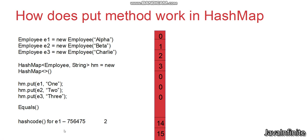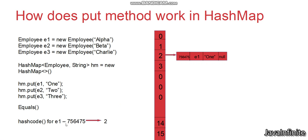Next, it calculates the index — which bucket this value should be placed in. The index is calculated using the formula: hashCode & (n - 1). Based on that calculation, for object e1 with hash code 756475, HashMap has calculated the index as 2, that is bucket 2. It then goes to bucket 2 and populates the values: first the hash code itself (756475), followed by the key, followed by the value, and followed by the next node which is null for now.